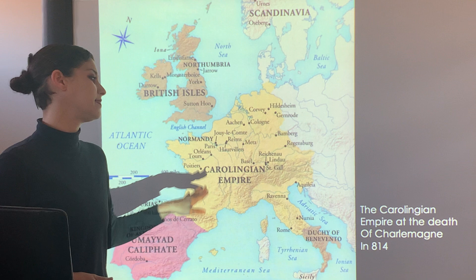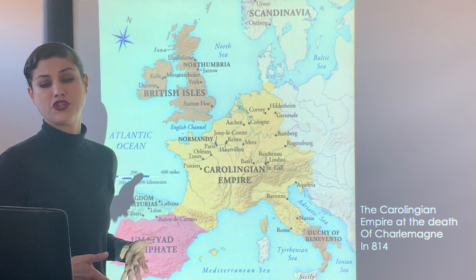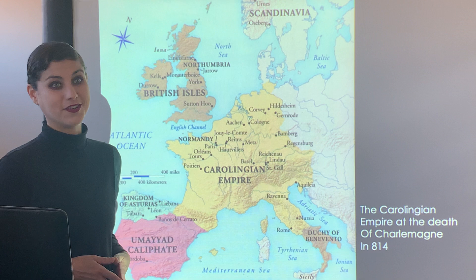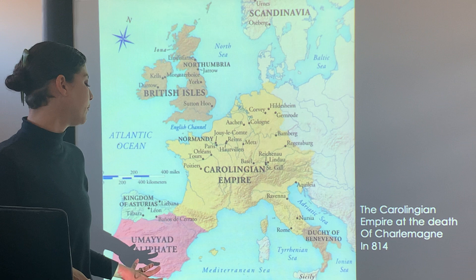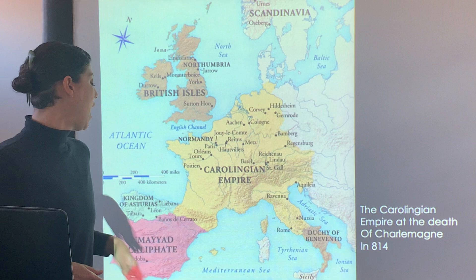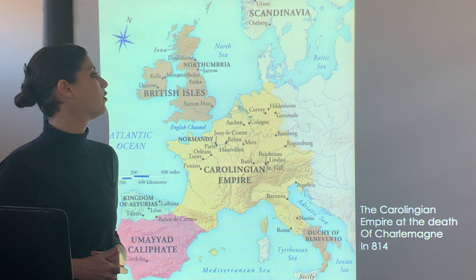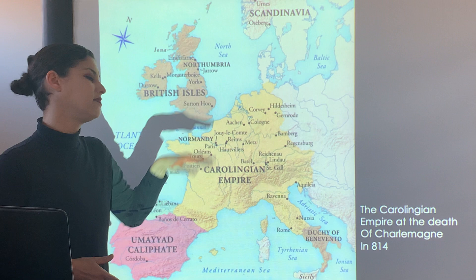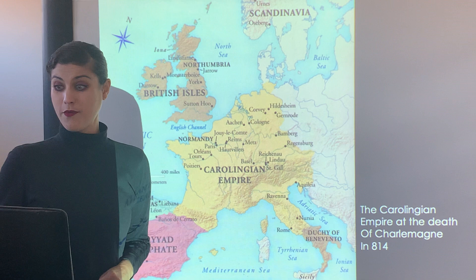His empire is known as the Carolingian period — the state he founded is called the Carolingian Empire, also referred to as the Holy Roman Empire, even though he was really neither holy nor Roman. We are also going to look at some of the influence of the Muslim world in the south of Spain, and the influence that the Vikings of Scandinavia have, especially throughout the coastal towns of the British Isles and parts of Northern Europe.